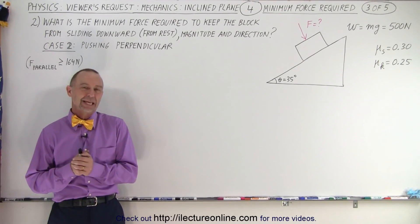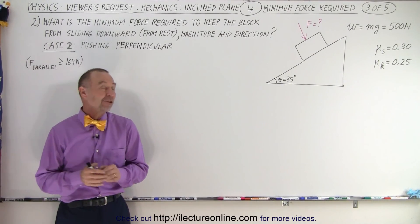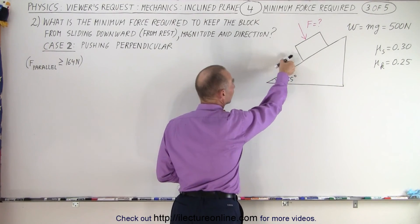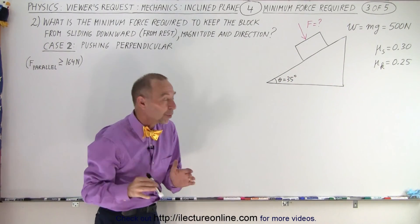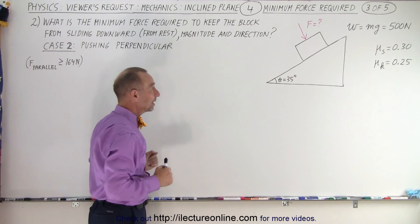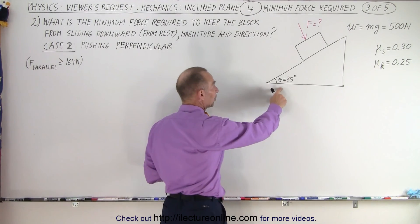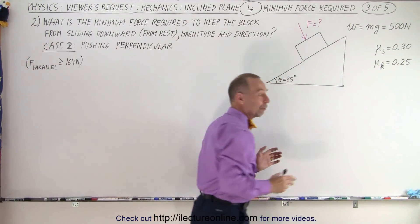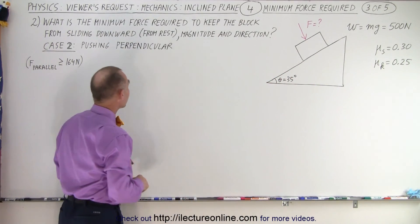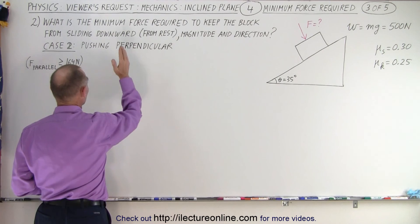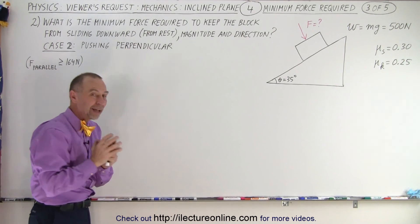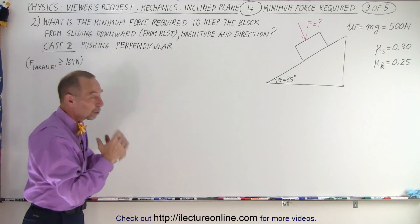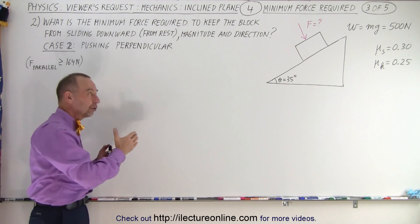Welcome to Electronline. In the previous video, we had the force pushing against the block parallel to the incline. We're looking for the minimum force required to keep the block from sliding down. It's on an incline of 35 degrees, the weight of the block is 500 newtons, and the static coefficient of friction is 0.3. We're going to start with the block from rest, so we only have to worry about the static coefficient of friction. What's the minimum force required to keep the block from starting to move?